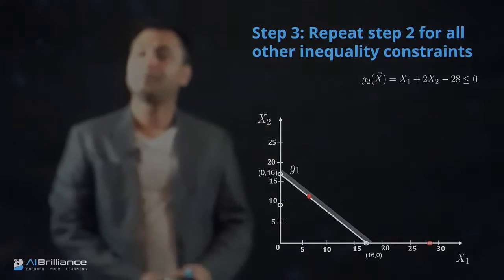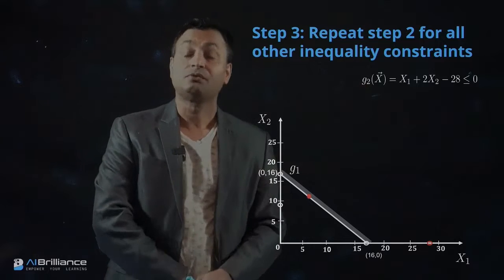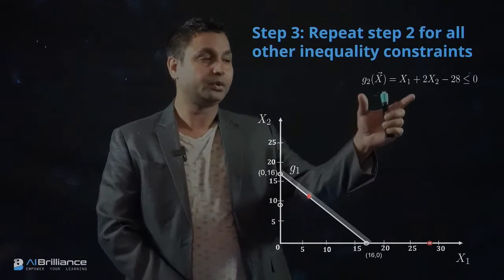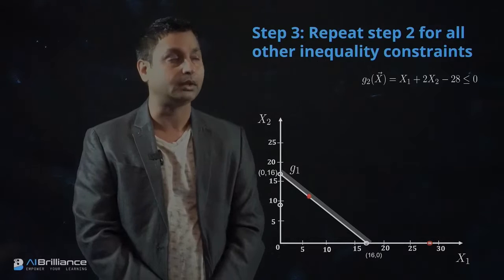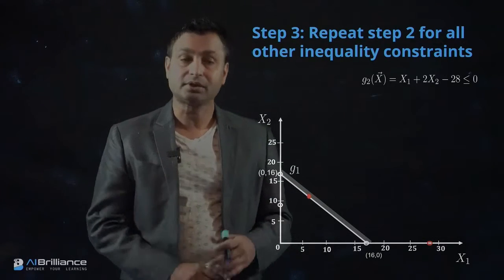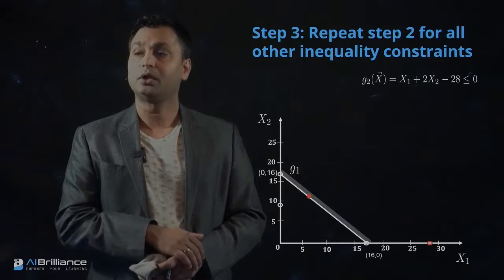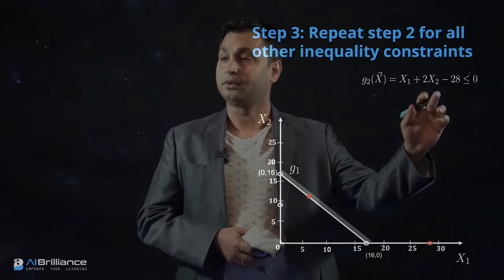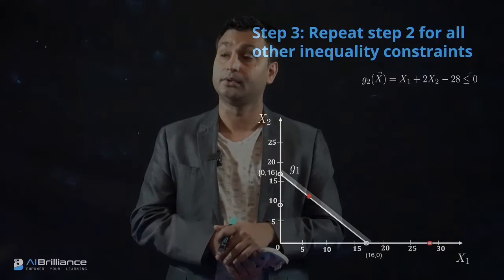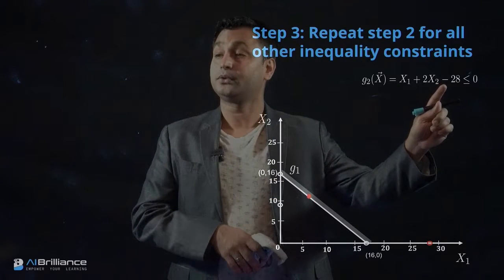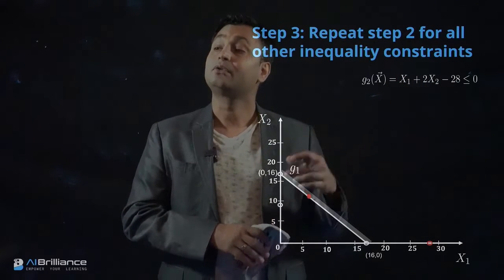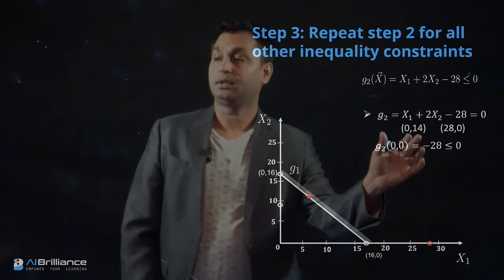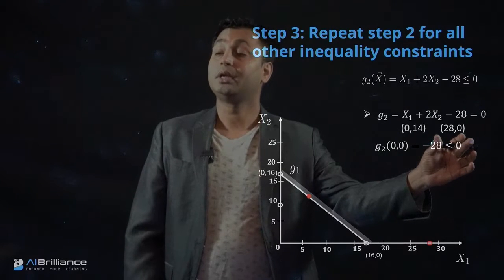We will repeat this for all inequality constraints. We now have the second inequality constraint G2, given by x1 + 2x2 - 28 ≤ 0. Using the same approach as before, we set x1 = 0, which gives x2 = 14, and set x2 = 0, which gives x1 = 28. So the two points (0, 14) and (28, 0) lie on this line.